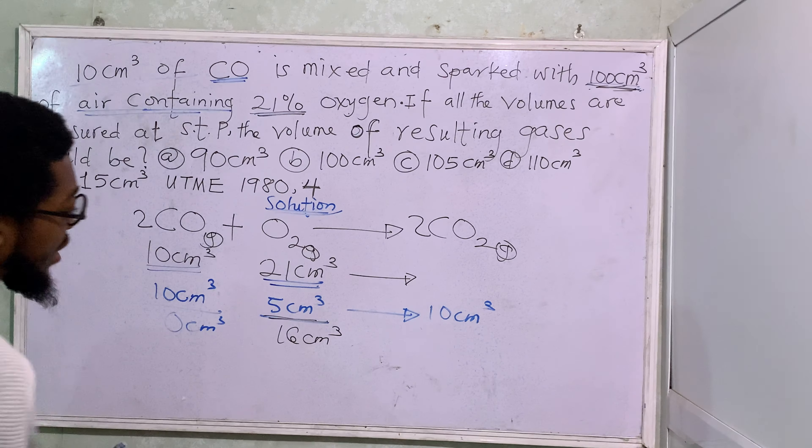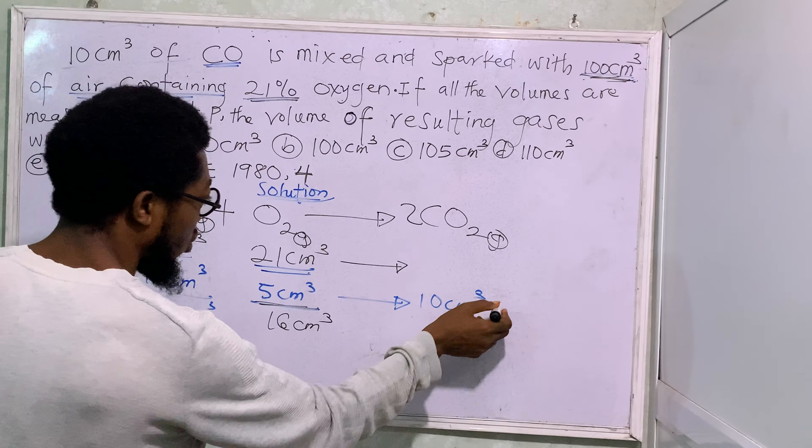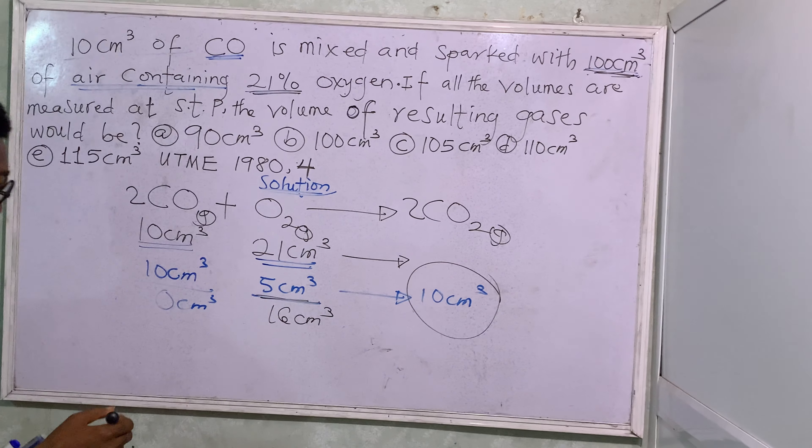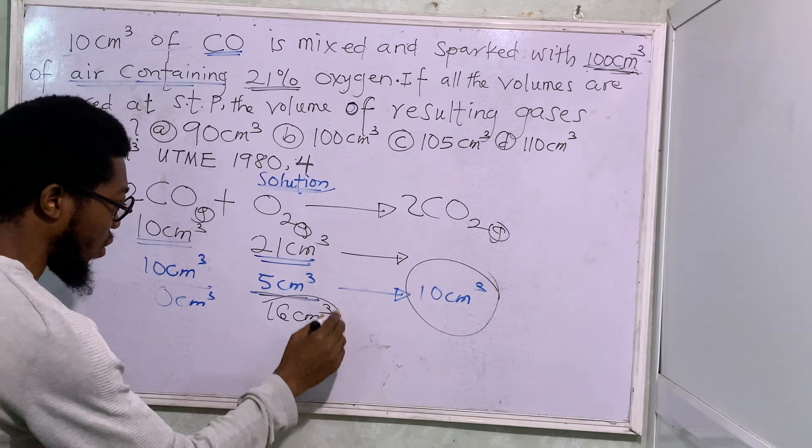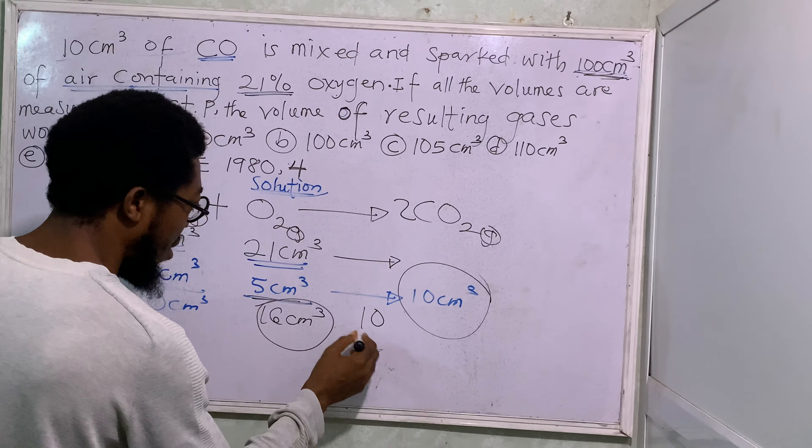When we ask you for residual gas, it is everything that is left after the reaction. So after the reaction, my product remains 10 cm³. After reaction out of 21 oxygen, I still have 16. So that means my answer is now 10 plus 16.